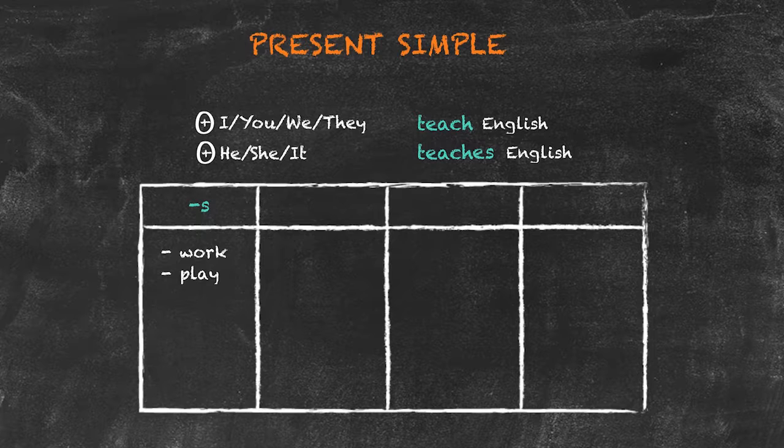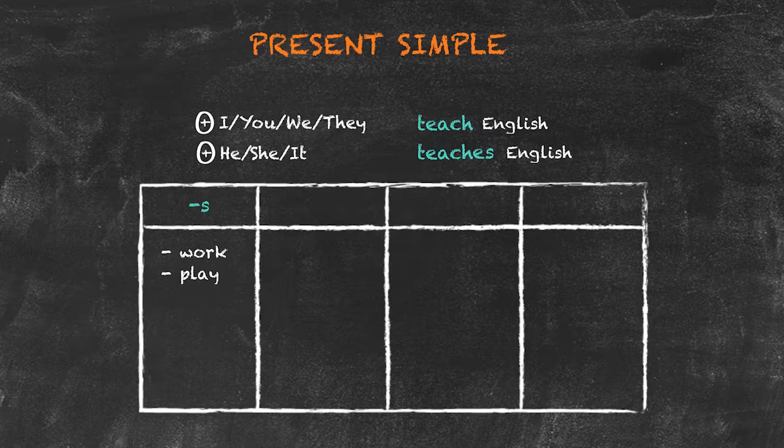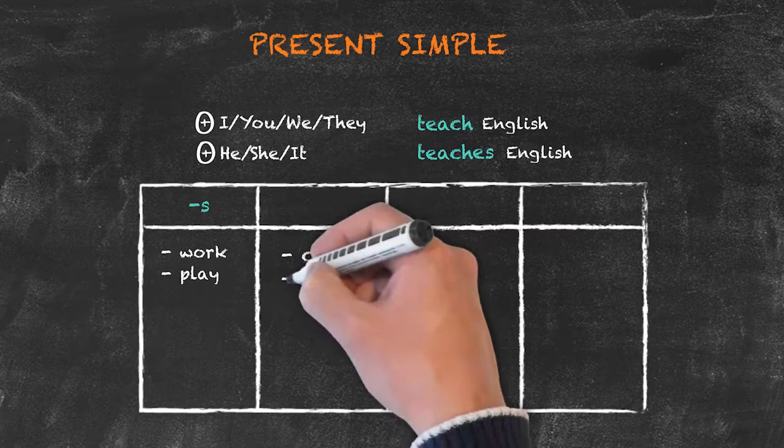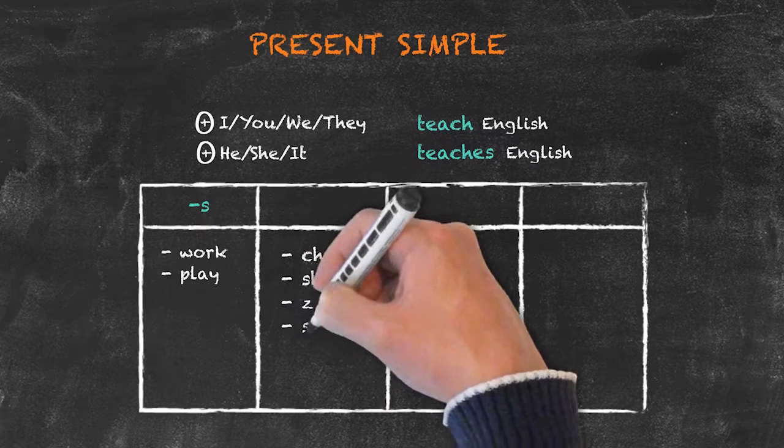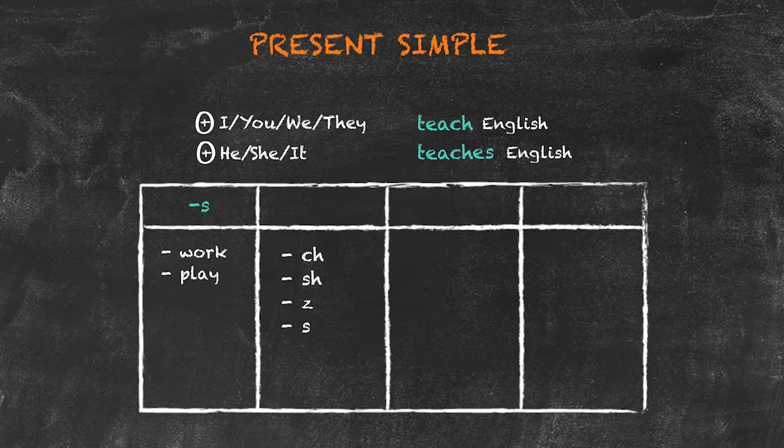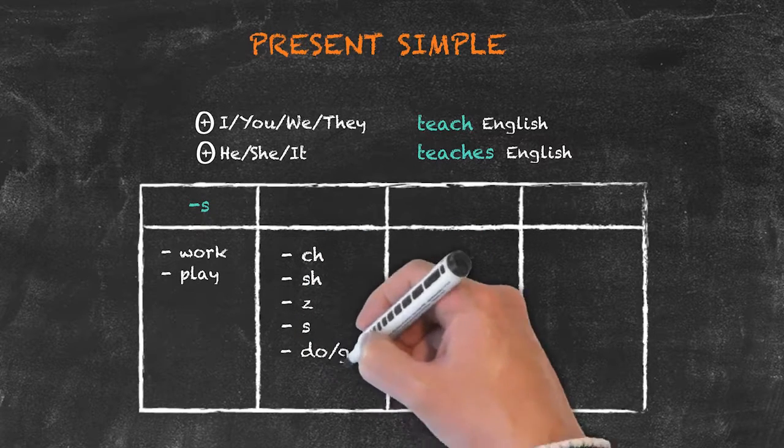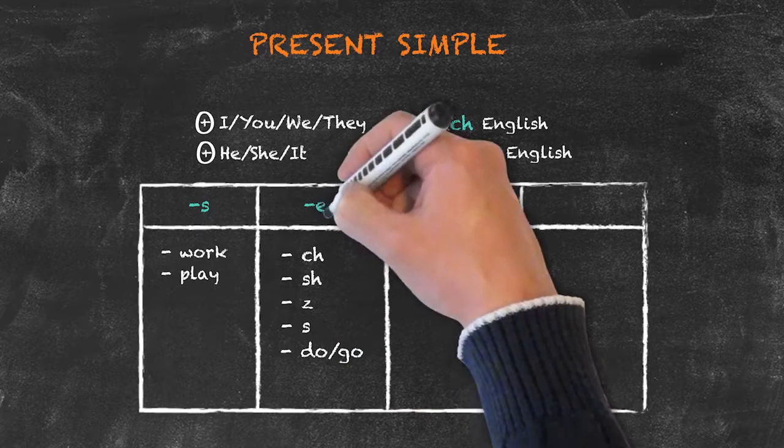However, when we have verbs with spelling patterns such as ending in ch, sh, z, s, and our shorter verbs do and go, we have to add es.